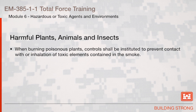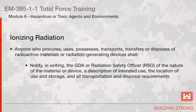When burning poisonous plants, controls shall be instituted to prevent contact with or inhalation of toxic elements contained in the smoke. Anyone who procures, uses, possesses, transports, transfers, or disposes of radioactive material or radiation generating devices shall notify in writing the GDA or radiation safety officer of nature of the material or device, a description of intended use, the location of use and storage, and all transportation and disposal requirements.